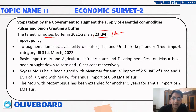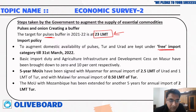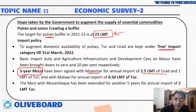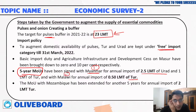Import policies to augment availability of pulses include free import category till March 2022. India signed five-year MOUs with various countries: Myanmar will transfer 2.5 lakh million tons of urad and 1 lakh million ton of tur, and Malawi will provide 0.5 lakh million ton of tur. These countries have been specially considered for providing pulses to India.